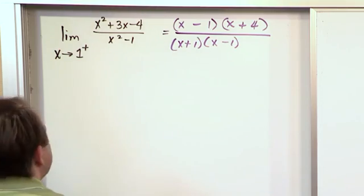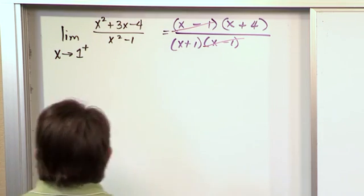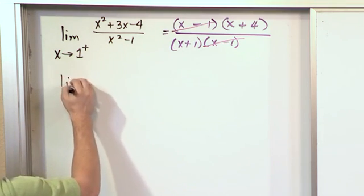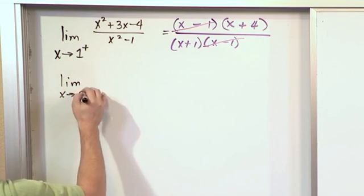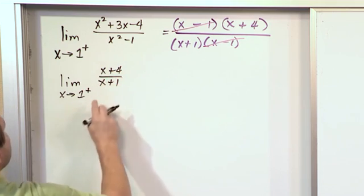And we immediately see that we can cancel these guys, which is awesome, so that we can go down and rewrite everything. We'll take the limit of x approaching 1 from the right of x plus 4 over x plus 1.